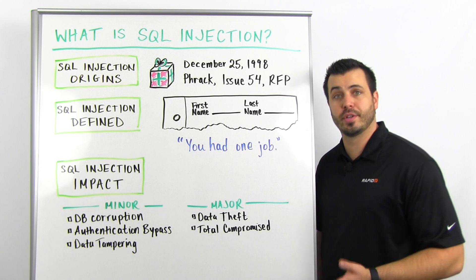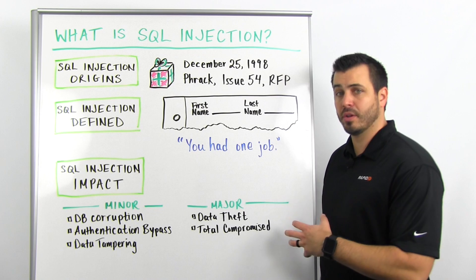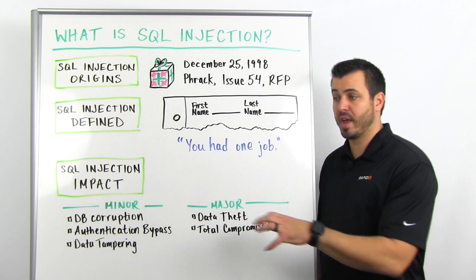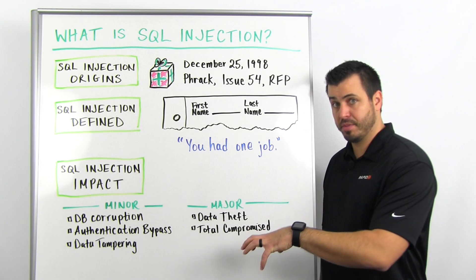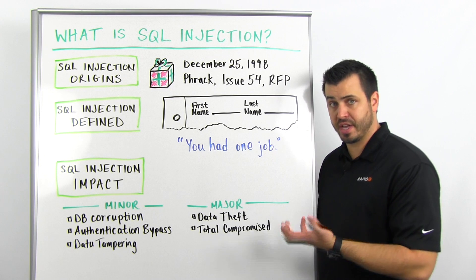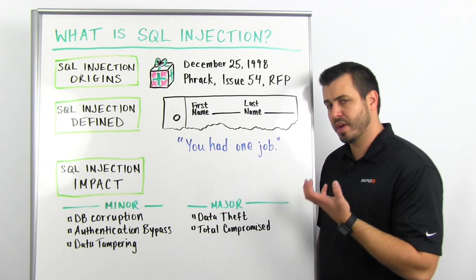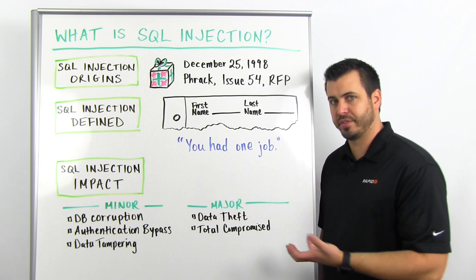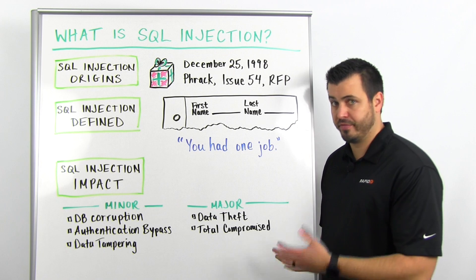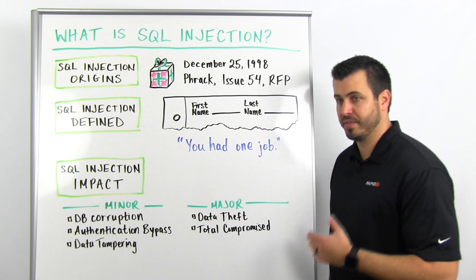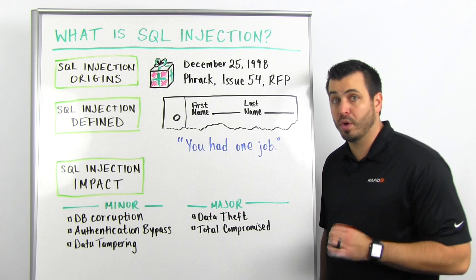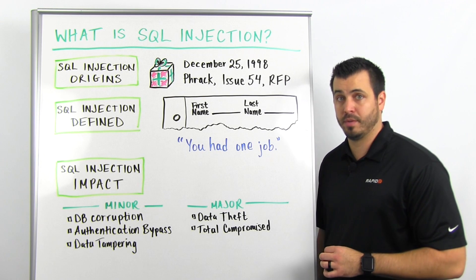They do what they're told to do. We need to handle this information in a very clear way — tell the computer, tell the database server, this is information, this is not instructions. You do not execute this. You perform a function and then you respond. Very, very simple. This is so embarrassing. This is the ultimate 'you had one job to do.'